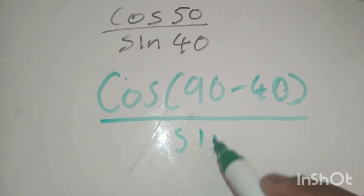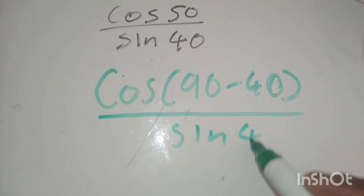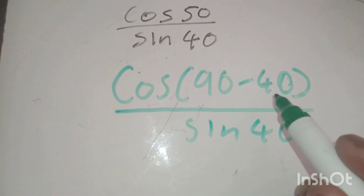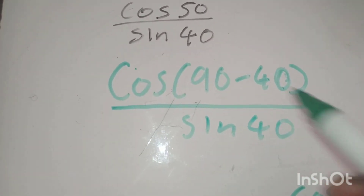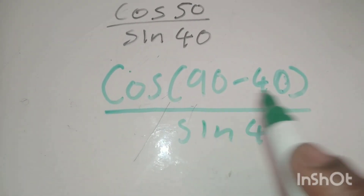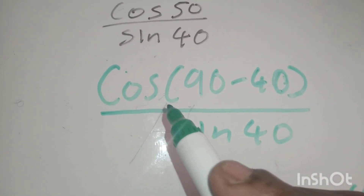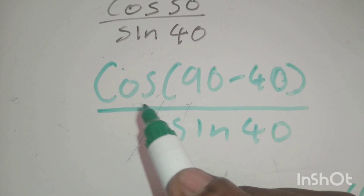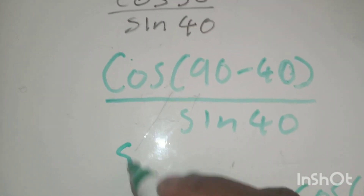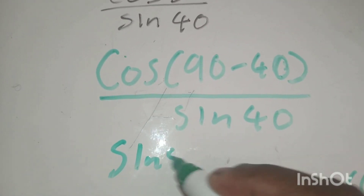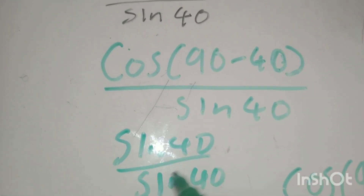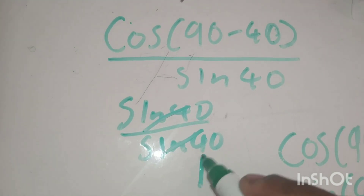Then we have over sin(40). So we use the co-ratio identity: cos(90 minus theta) is sin(theta). So cos(90 minus 40) is sin(40). Now we have sin(40) over sin(40). This just cancels out and gives you 1. And we're done.